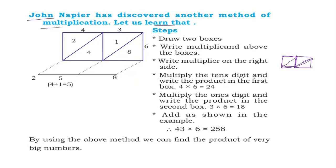Put 2 boxes here and join the corners like this: 4, 3, and 6. Starting from the unit digit: 6 into 3 is 18 — put 8 in the unit digit place and 1 in the tens digit place. Then 6 into 4 is 24 — put 4 in the unit place and 2 in the tens place of that cell.